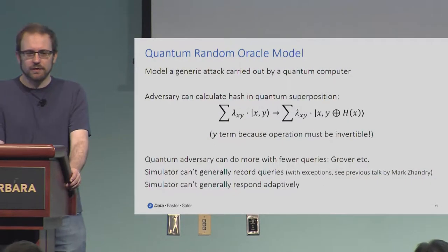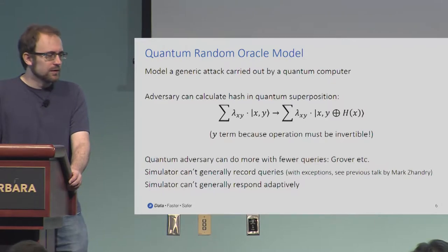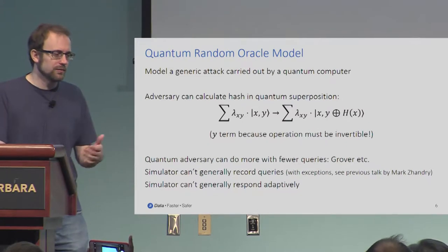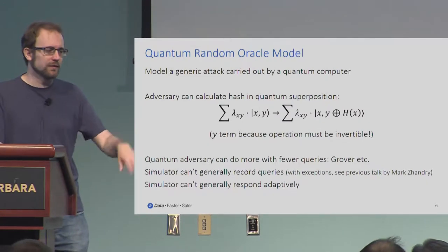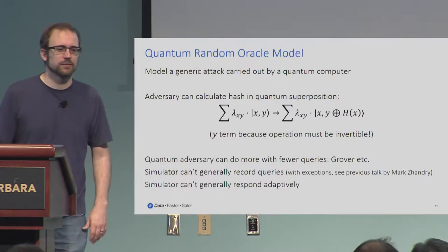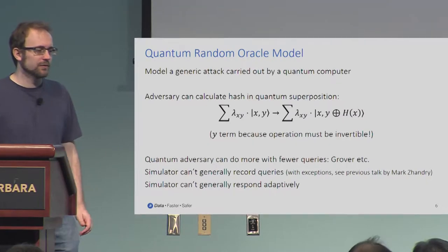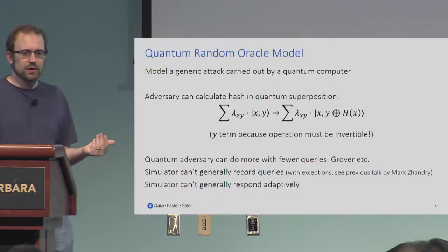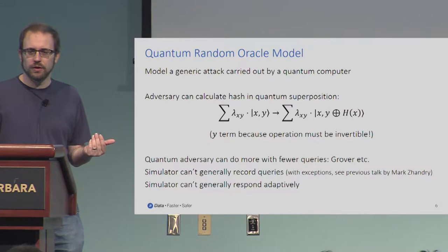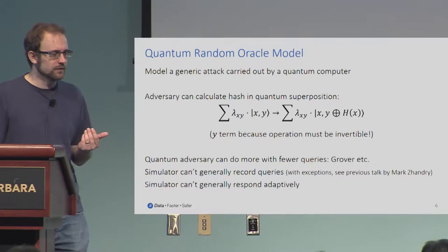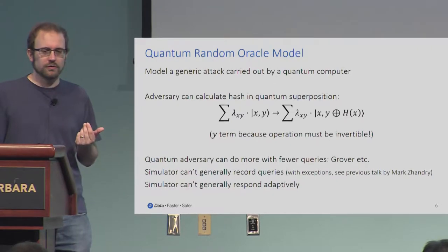In the quantum random oracle model, things get more complicated. The adversary can now query the hash function in quantum superposition. As Mark said, you could imagine he puts in a sum of amplitude times x and gets out the sum of amplitude times hash of x — but that doesn't actually work because it's got to be reversible. So it's actually x, y, and then hash of x XOR'd into y — same basic idea. It's been shown that quantum adversaries can do more in this model with fewer queries on some problems and on some they can't, and it's kind of hard to tell intuitively which those are going to be.